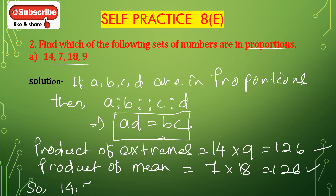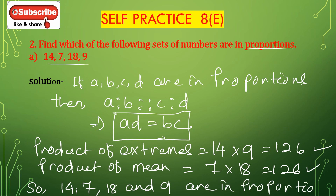So 14, 7, 18, and 9 are in proportion. That is, 14 is to 7 is proportional to 18 is to 9. Product of extremes equals product of means, so the numbers are in proportion.